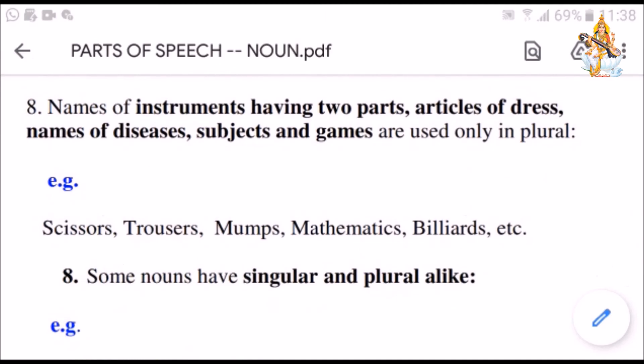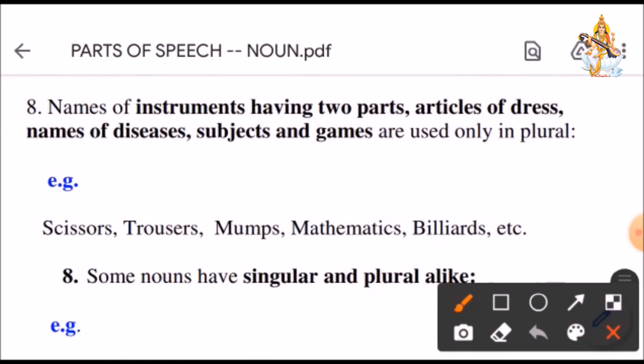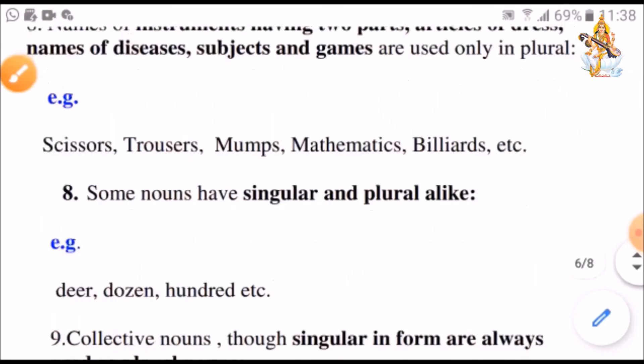There are few names of instruments which have two parts, articles of dress, names of diseases, subjects and games are used only in plural. Scissors, trousers, mumps, mathematics, billiards, etc. We always use S with them. They are never written without S.